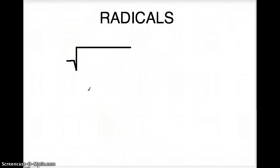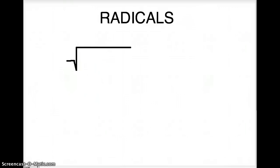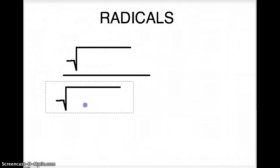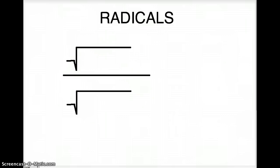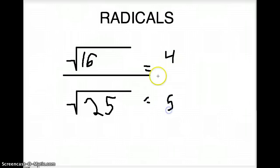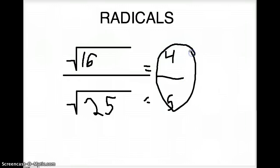Now what if we did this as a division problem, with a numerator and a denominator? What if we have the square root of 16 over the square root of 25? We know that the square root of 16 equals 4, and the square root of 25 equals 5. We keep the fraction line, and our answer is 4 over 5 — completely simplified.